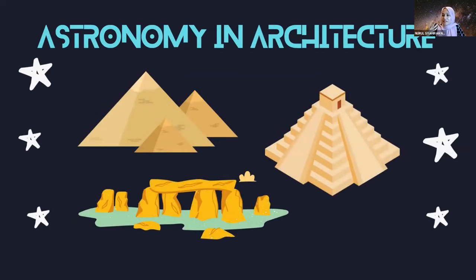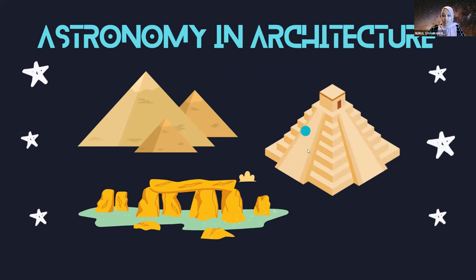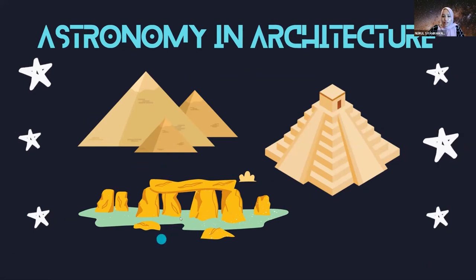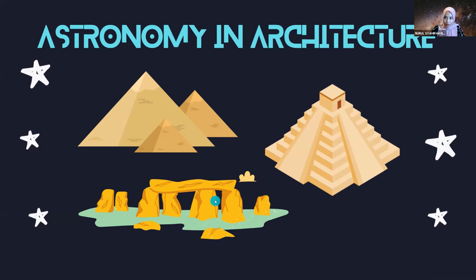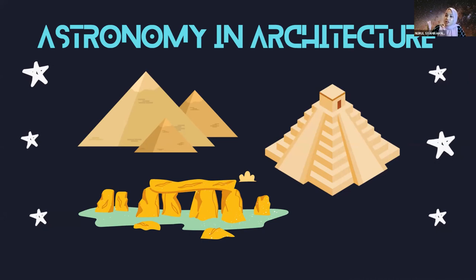Among the famous examples are the Pyramid of Giza in Egypt, Chichen Itza in Mexico, and Stonehenge. These are famous astronomical architectures built by ancient people to connect themselves to the cosmos, praise the heavens, and use the sky as reference for their earthly affairs.